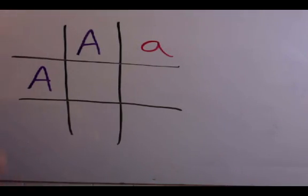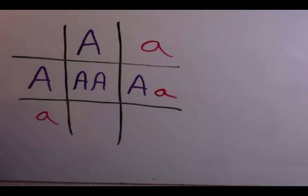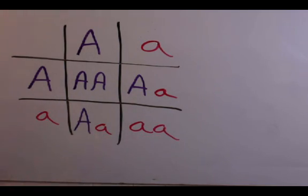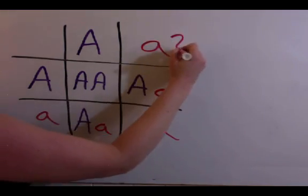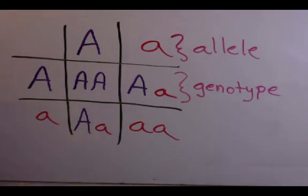Now, let's look at a Punnett square, which is a diagram that is used to predict an outcome of a breeding. This is going to give the probabilities for the genotype and the phenotype of the offspring. As you can see here, the A is the allele, and the combination of big A, little a, or little a, little a is the genotype.